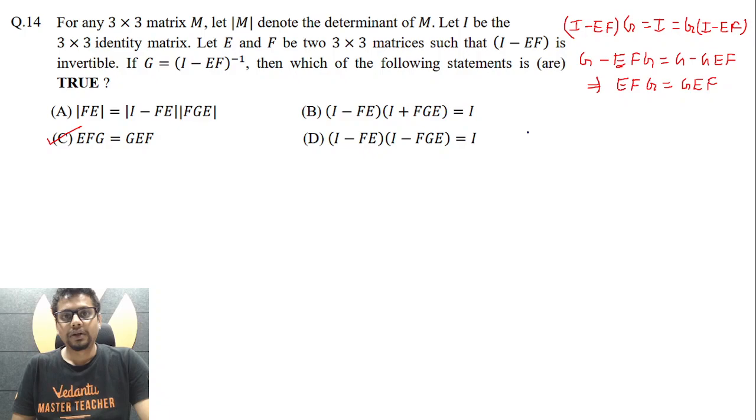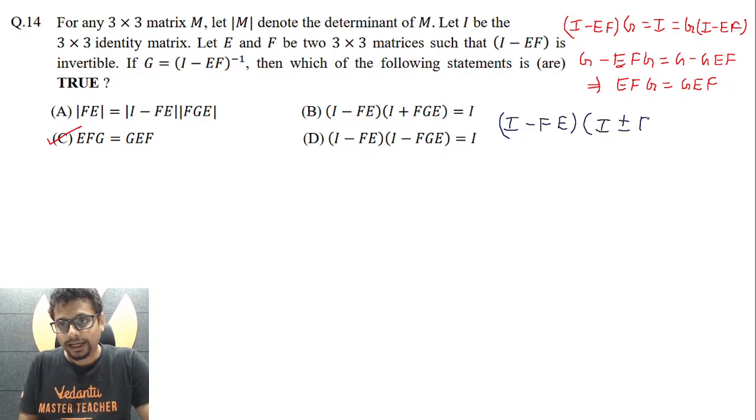C is indeed correct. Now let's first explore B and D options. Here if we see carefully the right hand side is the same. The pre-factor on left hand side is also the same. The post-factor on left hand side has difference of plus minus sign. So let's consider this left hand side and move ahead of both these options combinedly.